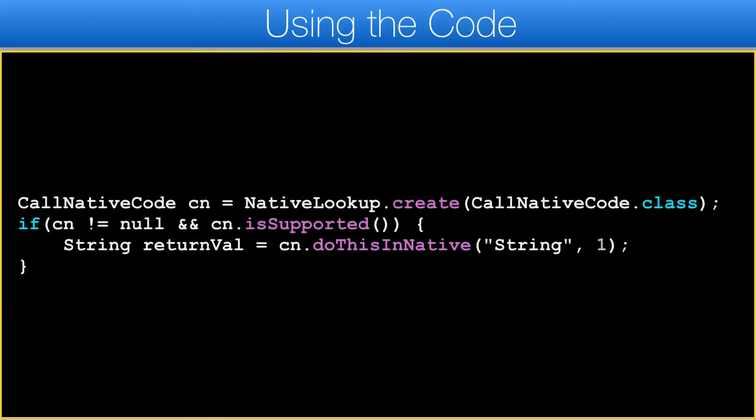Finally, we can invoke the native code. We use the lookup class to find the right native implementation. This can sometimes be null — for instance, in the build servers — so it's something we must check. We also check the isSupported method to make sure this specific platform was implemented. We can then use the native code as if it were a standard Java method.